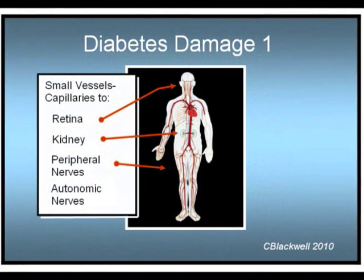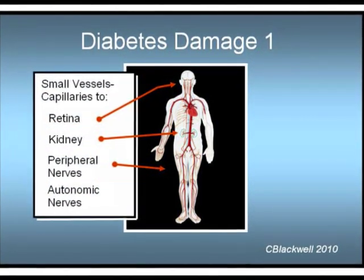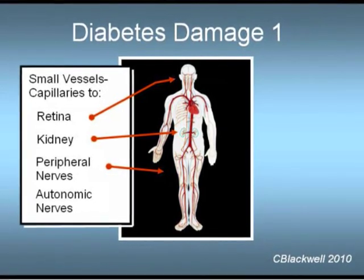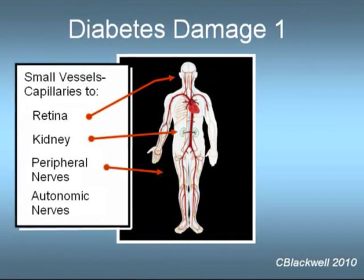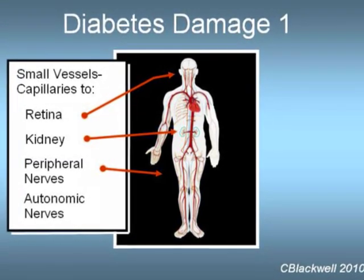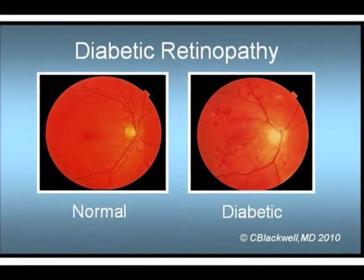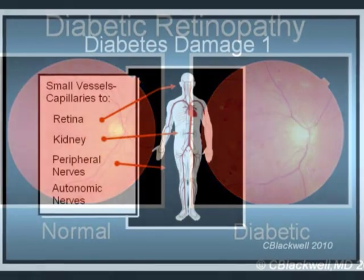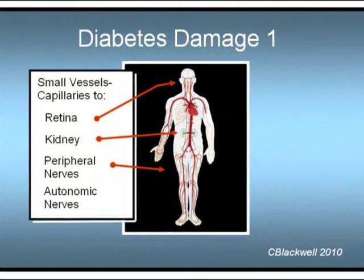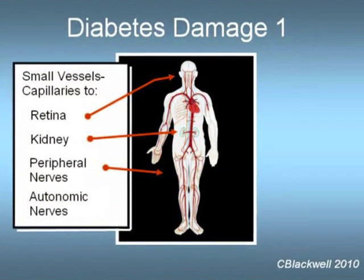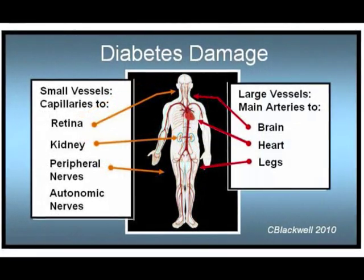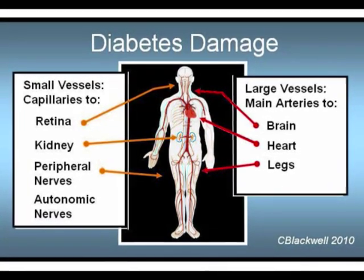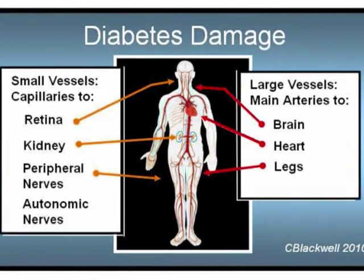Where does the damage happen in diabetes? For a long time, people concentrated on damage to the fine capillary blood vessels, which deliver oxygen and nutrients to the tissues in your body. These are the microvascular complications, with damage to the retina — diabetes is the leading cause of blindness between ages 20 and 70 — the kidneys — diabetes is the leading cause of kidney failure in the U.S. — and peripheral nerves. Diabetes also causes atherosclerosis, damaging and narrowing large blood vessels, causing an increase in stroke, heart attack, and peripheral vascular disease.